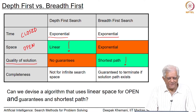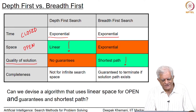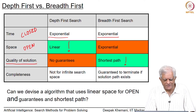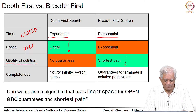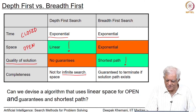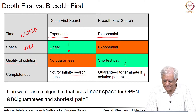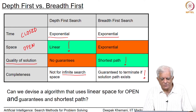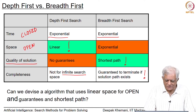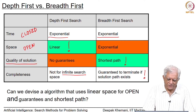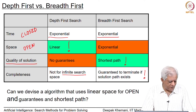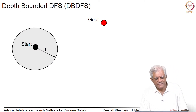In terms of completeness, for finite search spaces both are complete in the sense that both will end up exploring the entire space. But if you have an infinite search space, we have seen that depth first search can go into an infinite loop. Whereas breadth first search is guaranteed to terminate if there is a path to the goal node, because the path will always be of a finite length, and breadth first search goes down level by layer exploring paths of greater length.